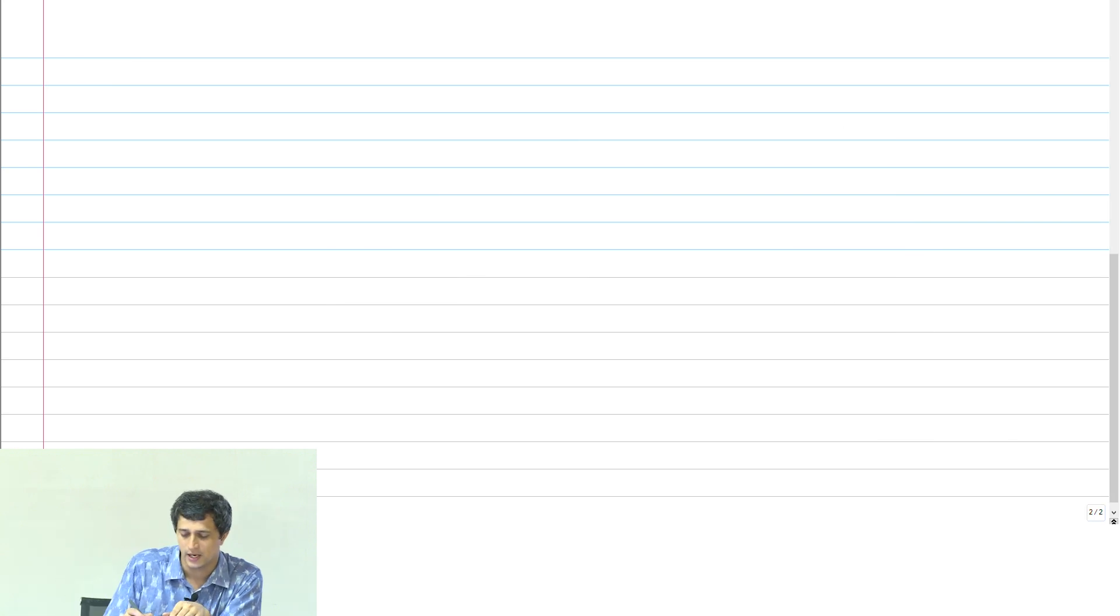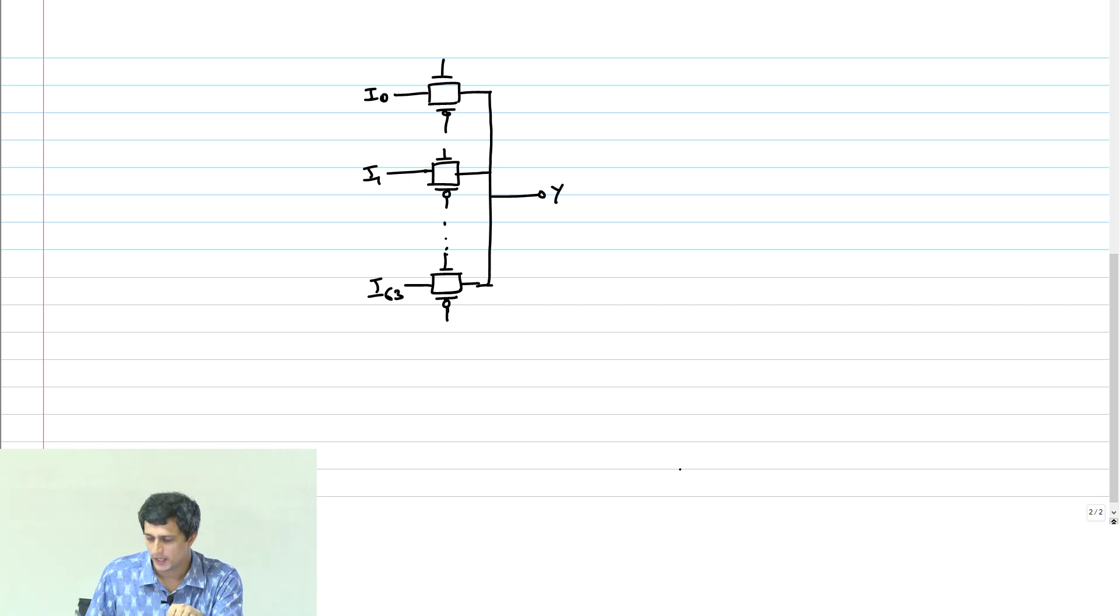For example, if I want to implement let's say 64 to 1 mux, what do I need to do? I basically need to simply do this. This is I1, or I0, we'll fill the select lines later, I1 all the way down to the 64th, I63. And I can simply wire OR all these connections and get my output Y which is a 64 to 1 mux.